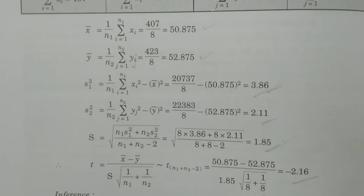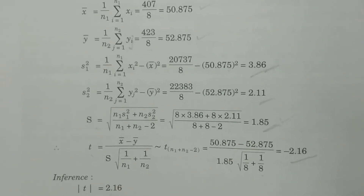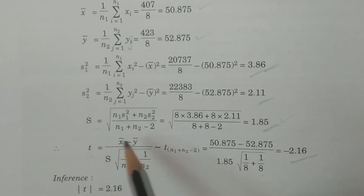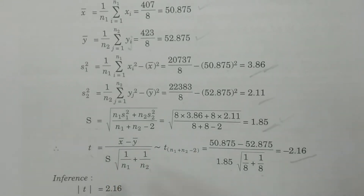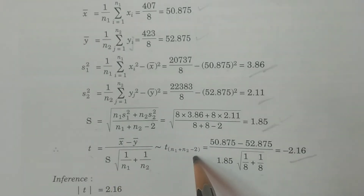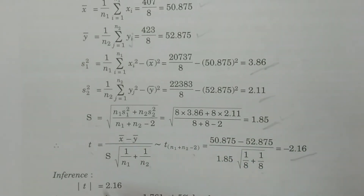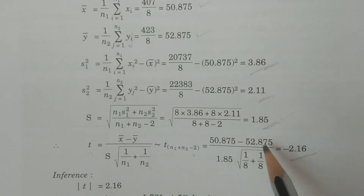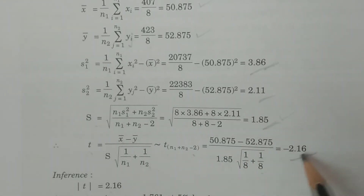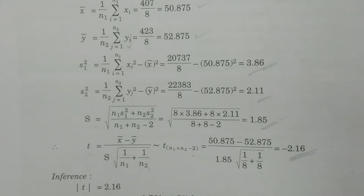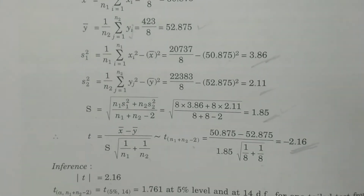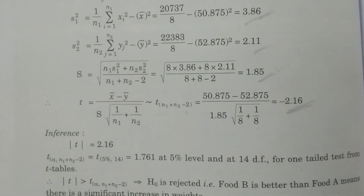Now calculate the test statistic under H0. T equals X-bar minus Y-bar divided by S times square root of (1/N1 + 1/N2), which follows t with N1 + N2 − 2 degrees of freedom. Substituting: (50.875 − 52.875) divided by 1.85 times square root of (1/8 + 1/8) = −2.16.